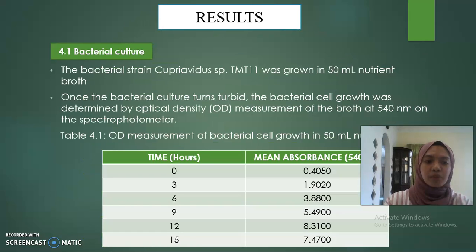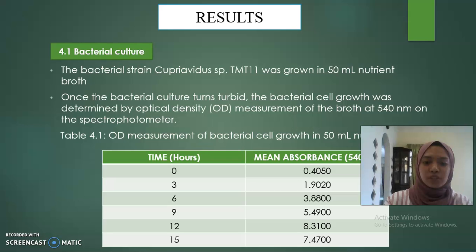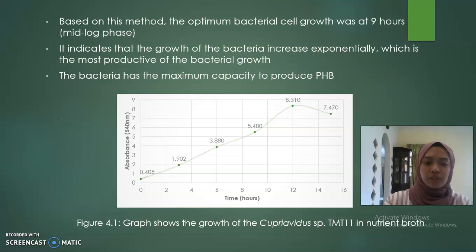For the results, section 4.1, bacterial culture. The bacterial strain Cupriavidus sp. MT11 was grown in 50 mL broth. Once the bacterial culture turned turbid, the bacterial cell growth was determined by optical density (OD) measurement of the broth at 540 nm on the spectrophotometer. Table 4.1 shows the OD measurement of bacterial cell growth in 50 mL broth. Based on this method, the optimum bacterial cell growth was at 9 hours, which is the mid-log phase.